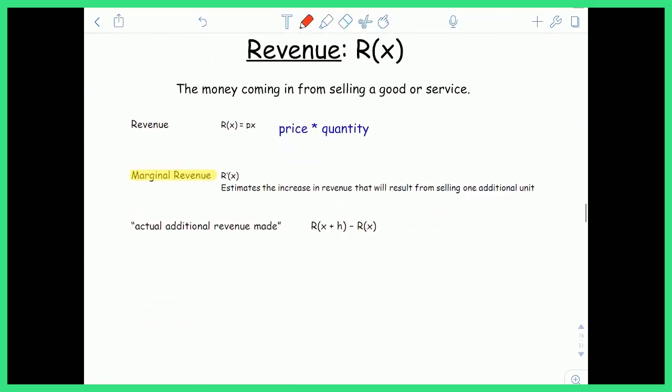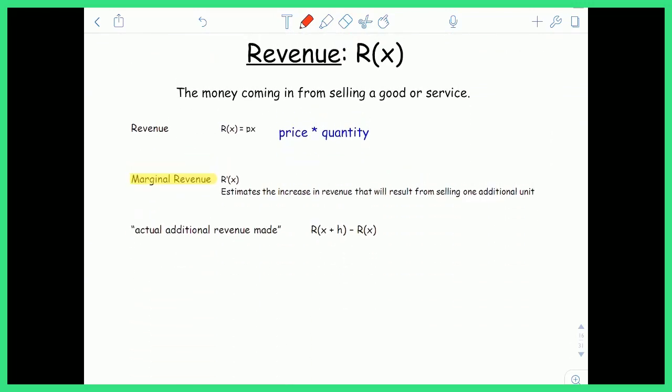The next function I'd like to talk about is revenue, which is going to be R of x. Revenue is defined to be the money coming in from selling a good or a service, so all the money that comes into the company from selling this. Revenue specifically is equal to price times quantity. How much are you selling an item for? How many of them are you selling? Price times quantity.